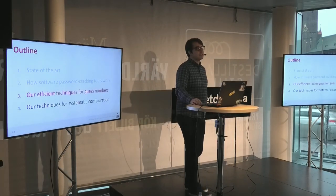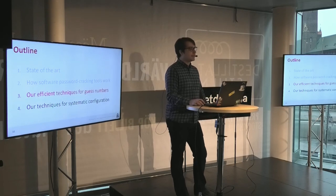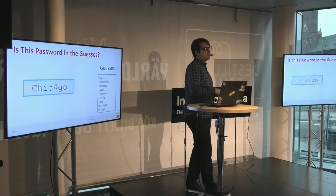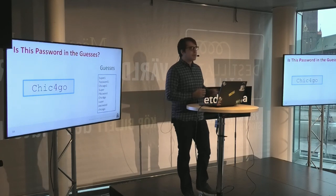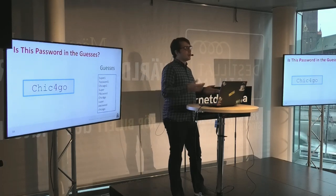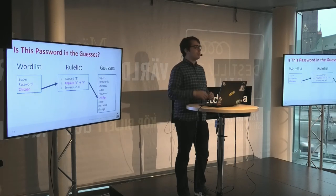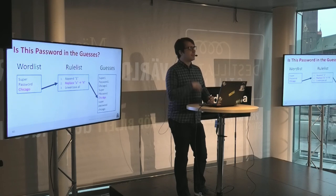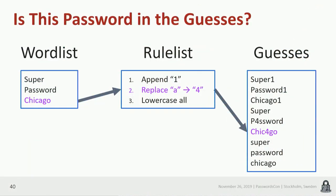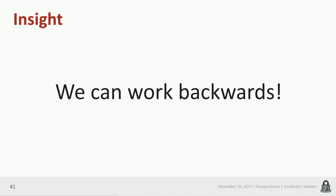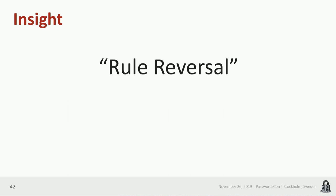Now I'll walk you through our techniques for reasoning analytically to get guess numbers. The problem setting is we start with some password of interest, like "Schick4Go." Normally, as Max presented, we think in the forward direction: take some word from the word list — like "Chicago" — put it through a rule like "replace A's with fours," and get the guess "Schick4Go." The way we're going to do this analytically is by reasoning in the backwards direction. This is actually a pretty old idea in the community — people have called it rule reversal — mentioned in passing at PasswordsCon many years ago.